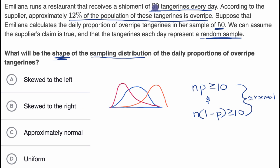Right over here, we're getting daily samples of 50 tangerines. So for this particular example, our n is equal to 50, and our population proportion, the proportion that is overripe, is 12%, so p is 0.12.